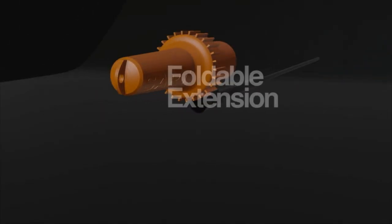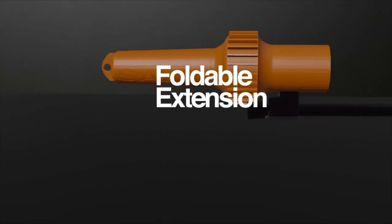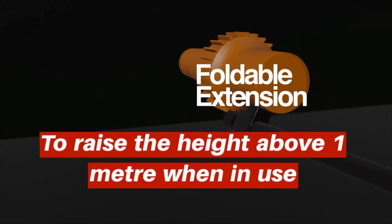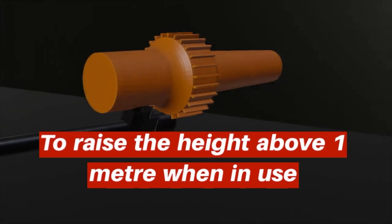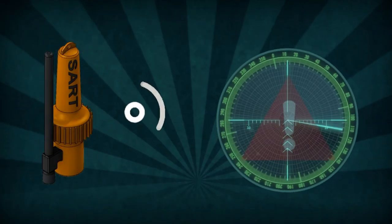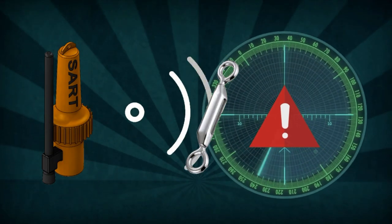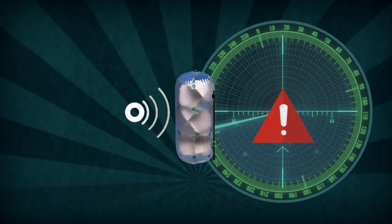Search and rescue transponder is also provided with a foldable extension handle or telescopic pole which can be used to raise the height of the instrument to one meter above sea level when in use. Additionally, the SART must not be obstructed by any metal objects or by an inflatable radar reflector.